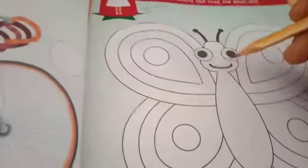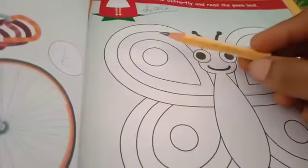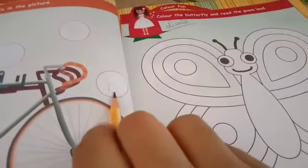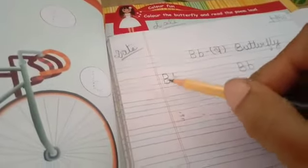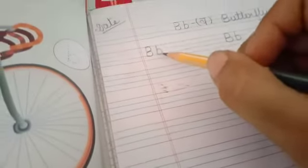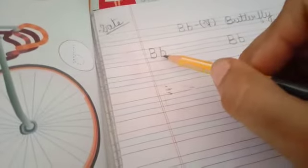Okay, in your last class you have written the small letter b. Now today you have to write capital letter and small letter both - capital letter B, then small letter b. B butterfly, b butterfly. Okay B, and the sound of B is /b/. So you have to remember the sound with